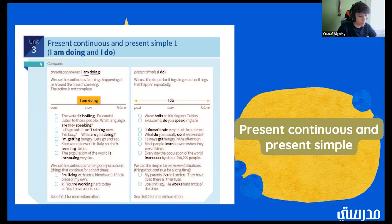So I'm living with some friends until I find a place of my own. And then we have the first person saying, you're working hard today. And B, yes, I have a lot to do. So that's just a quick overview over the present continuous. Now we want to move on to the present simple.